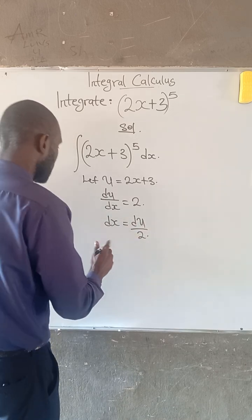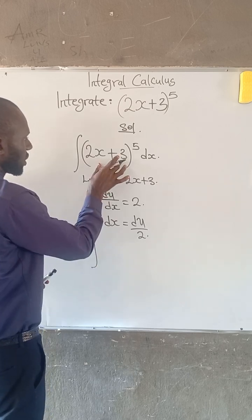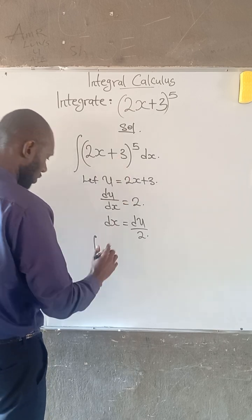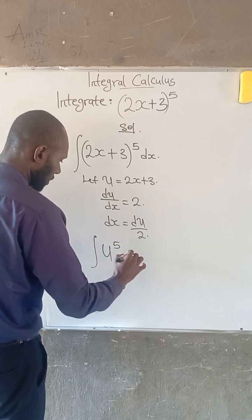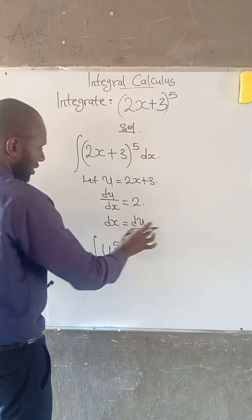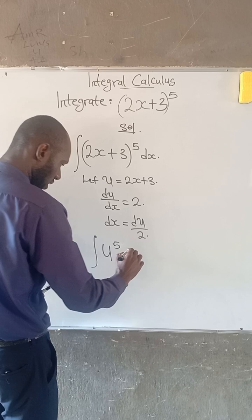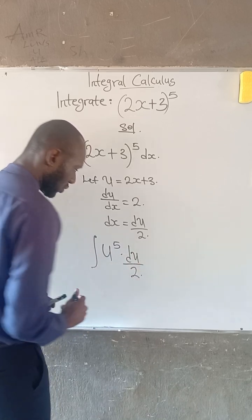So therefore we have it now that this integral, this expression here is now u to the power of 5 multiplied. And also dx is given as du divided by 2.